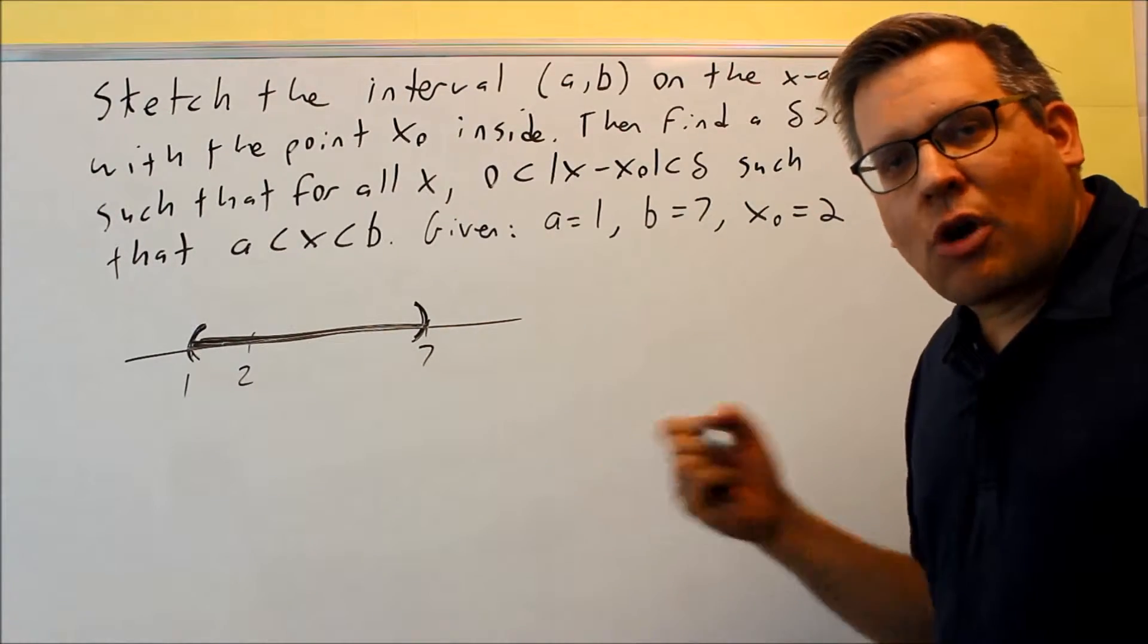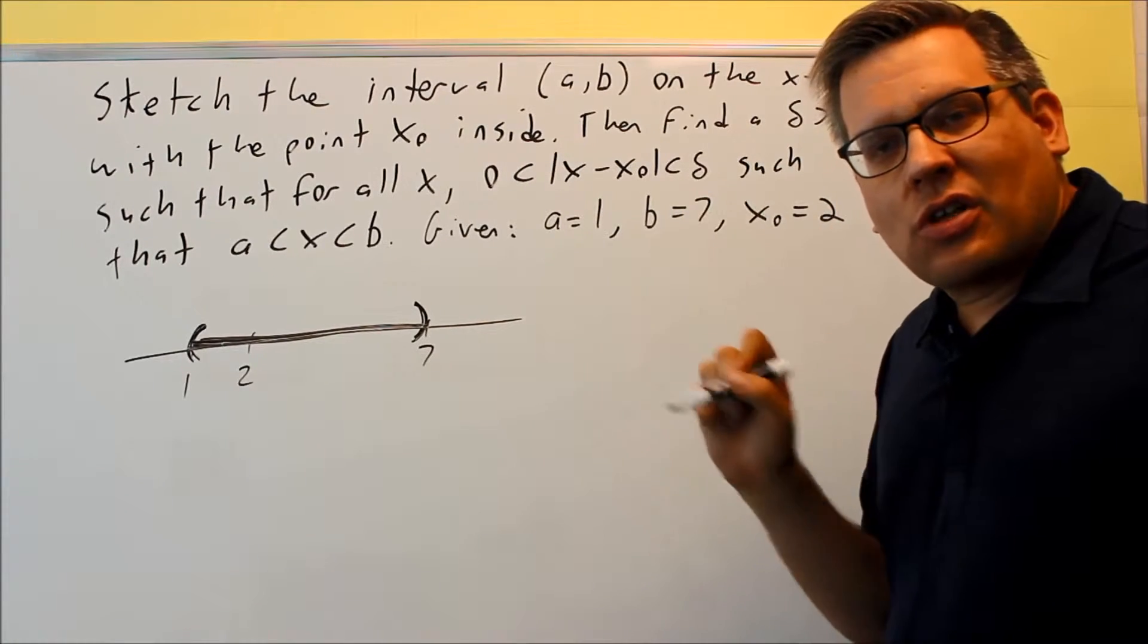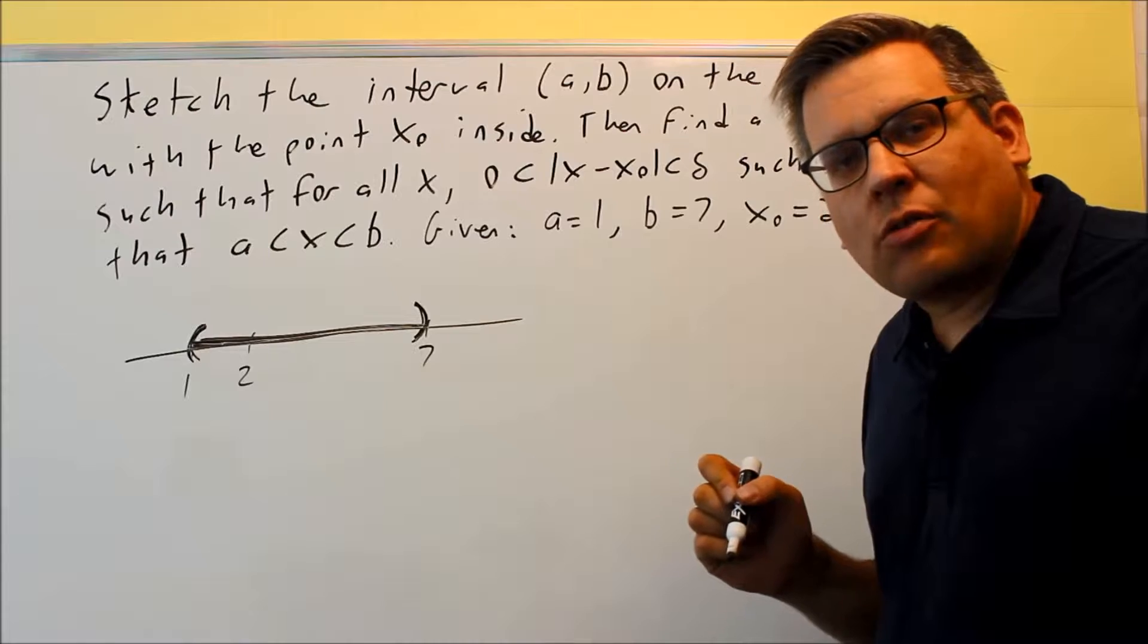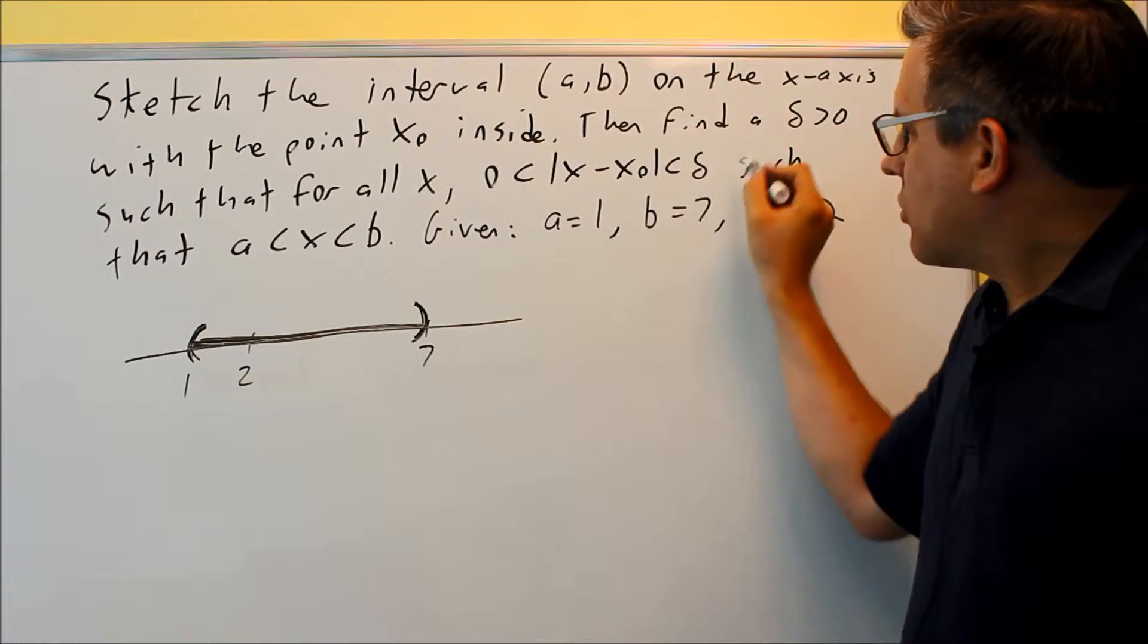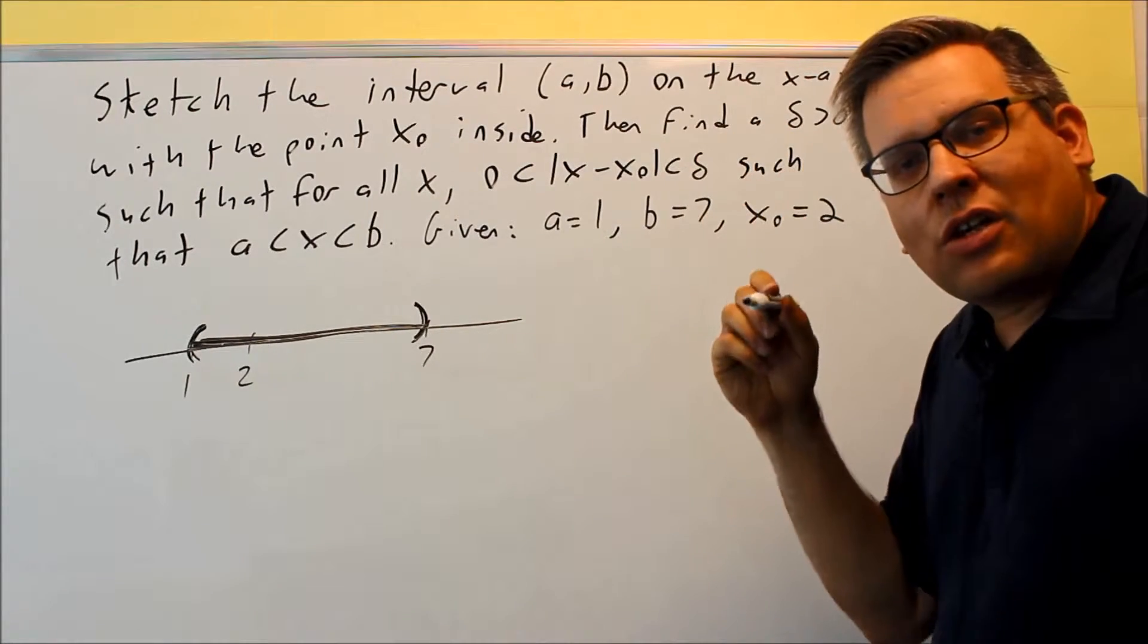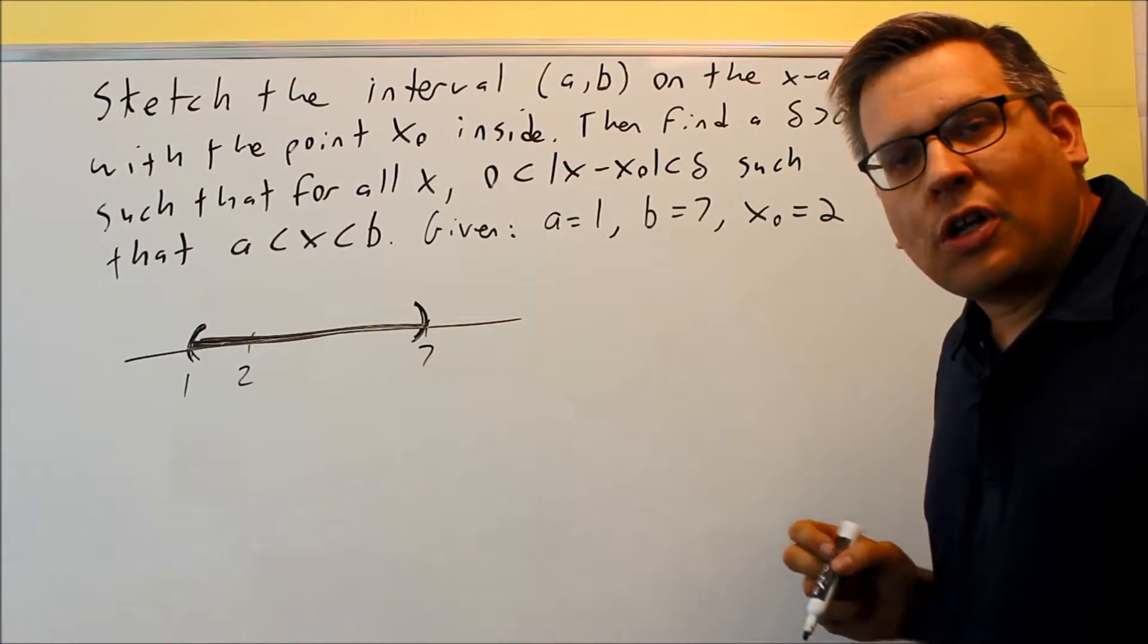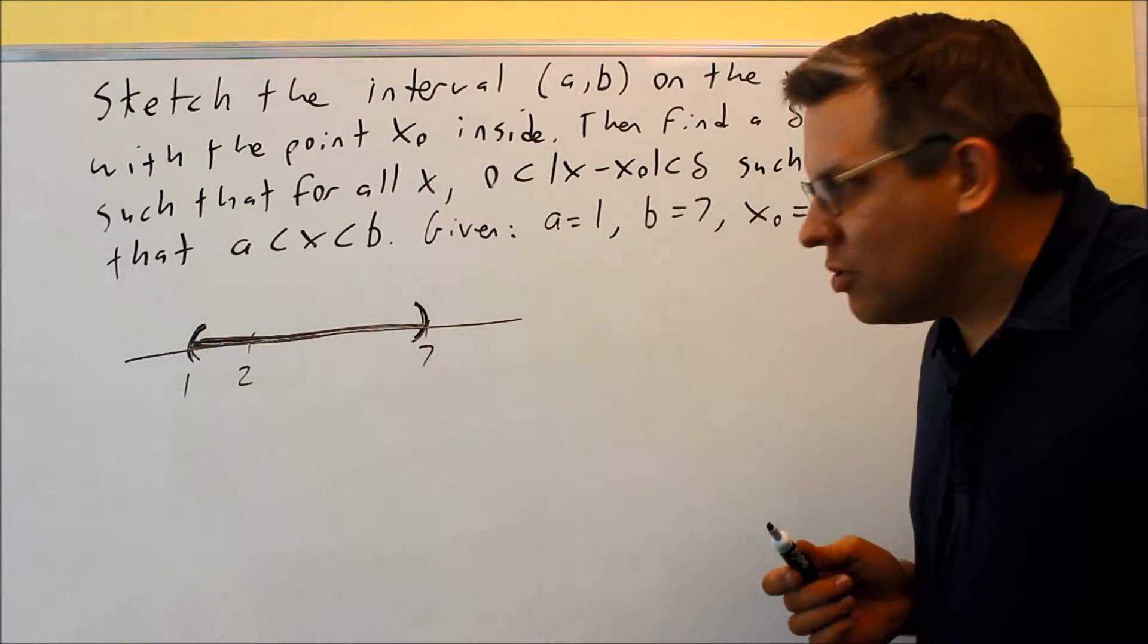Why are we choosing the smallest distance? Well, if we minimize the distance, the error in the x direction, that's going to minimize the error in the y direction. So by making this delta as small as possible, we can guarantee that the difference from L will be the smallest possible. That's why we're taking the minimum distance between these two.